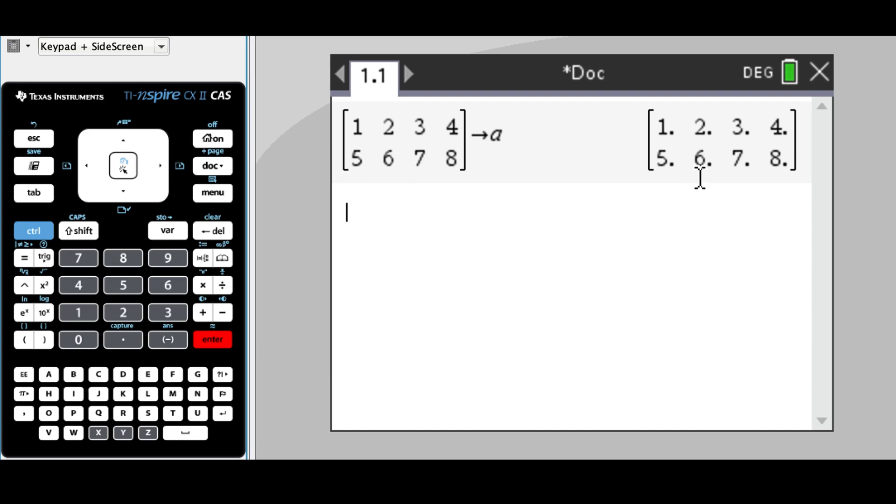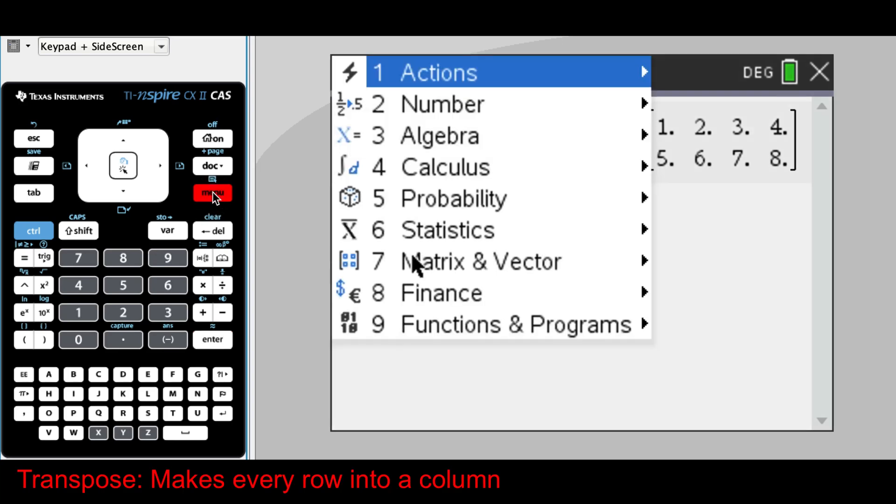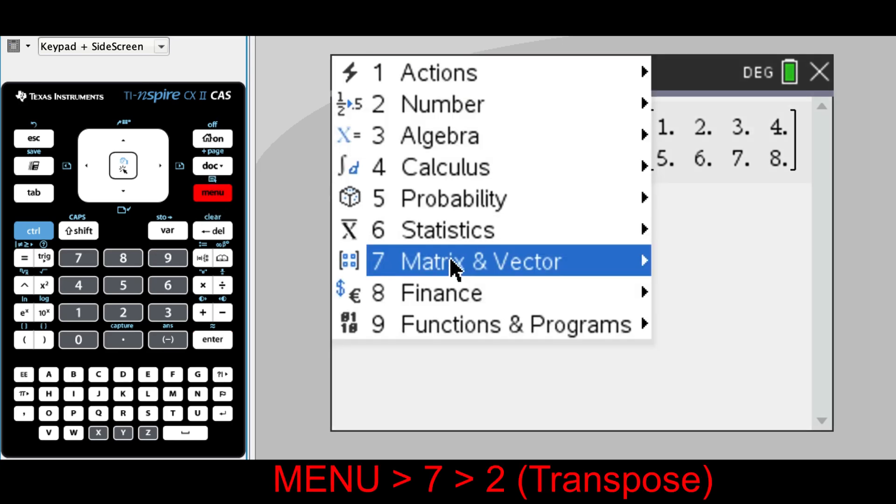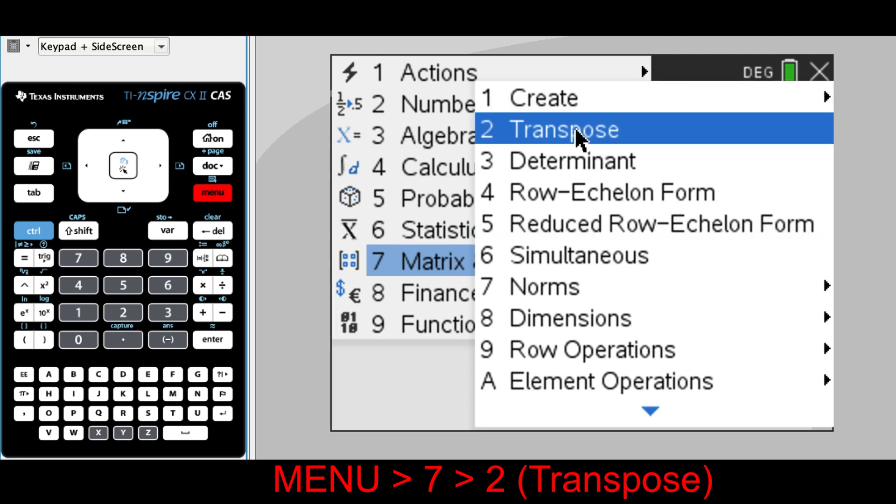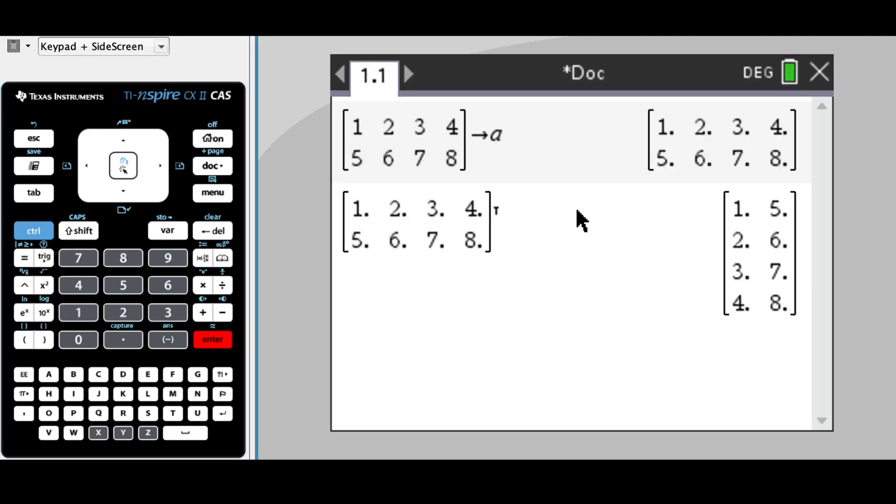From here we can use a couple of functions in the CAS to transpose the matrix. If we go into the menu button, go down to number 7 'Matrix and Vector' and transpose, you'll see that it'll change the matrix so every row in the original matrix has now become a column. That's what transposing does.